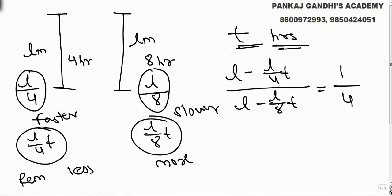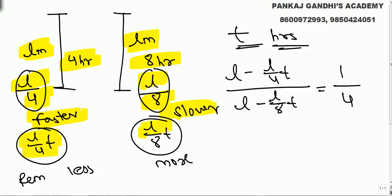To recap: one burns l meters in four hours, so l by four per hour; the second burns l by eight per hour. After t hours burning, the remaining length of one candle is four times the other — ratio is one to four. The faster-burning candle has less remaining, the slower has more.